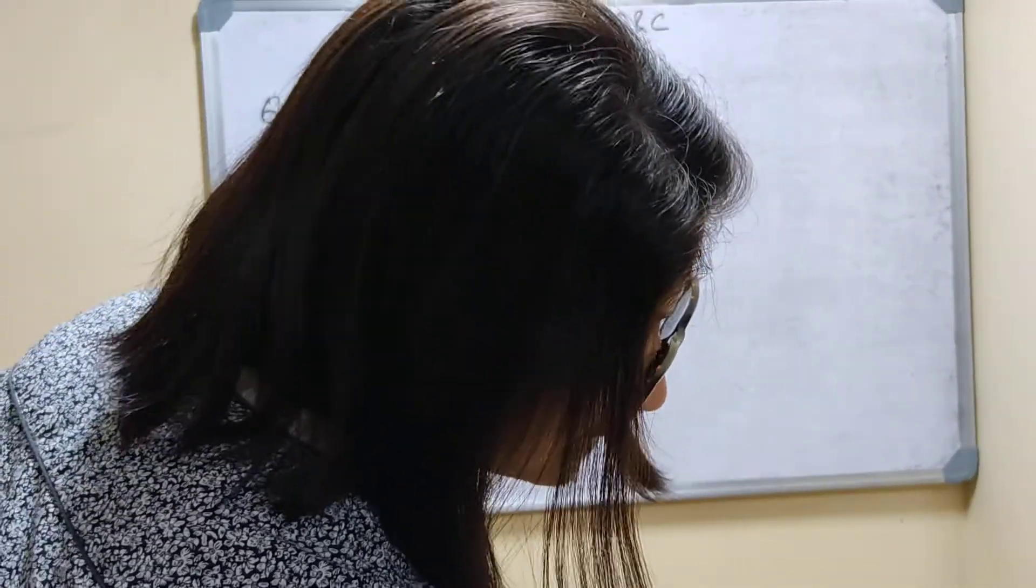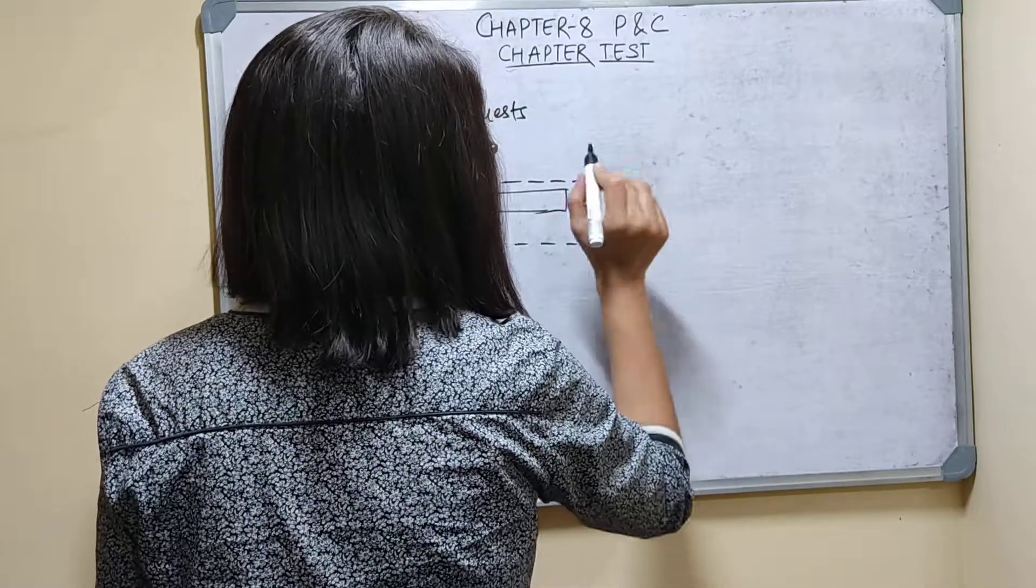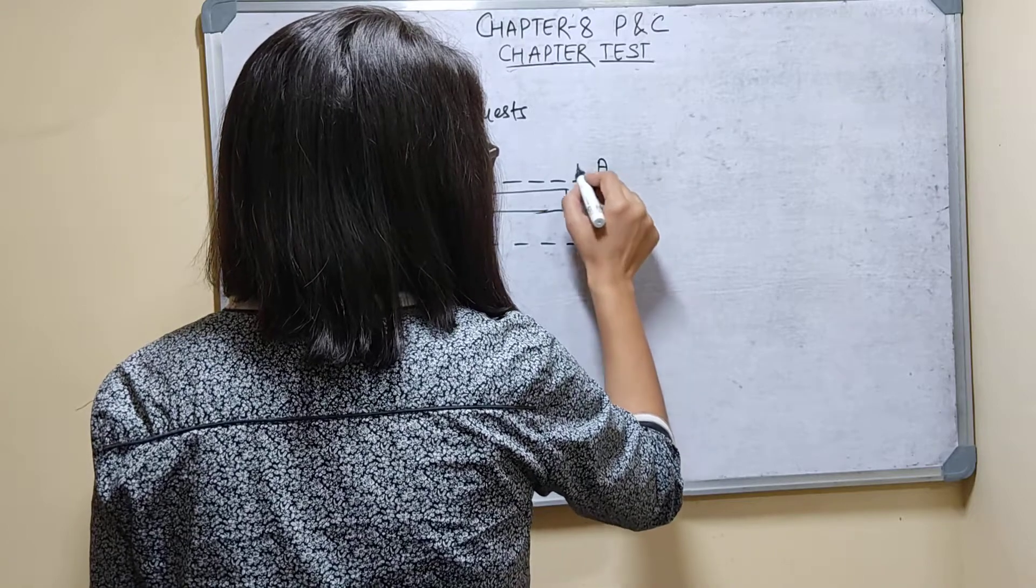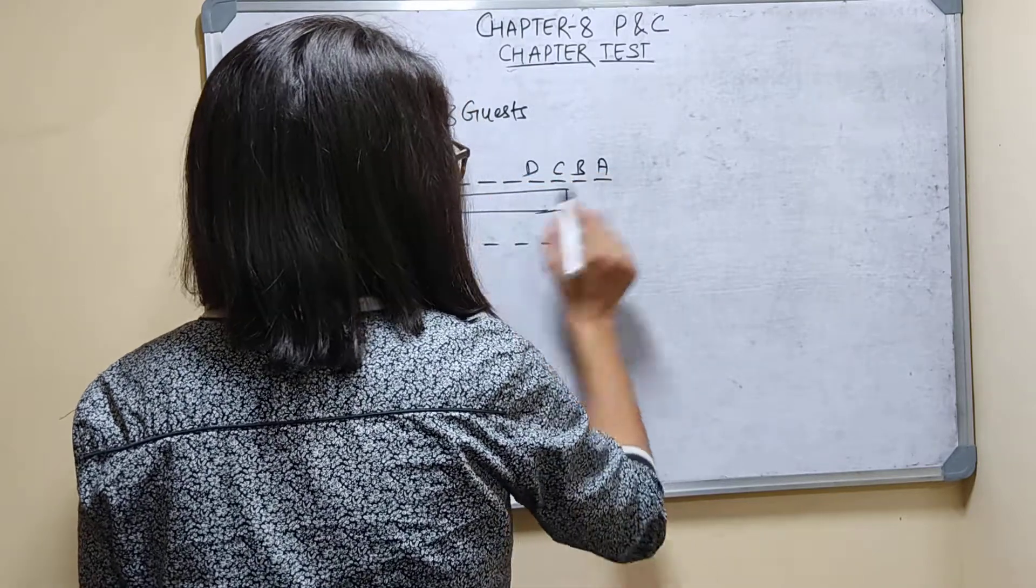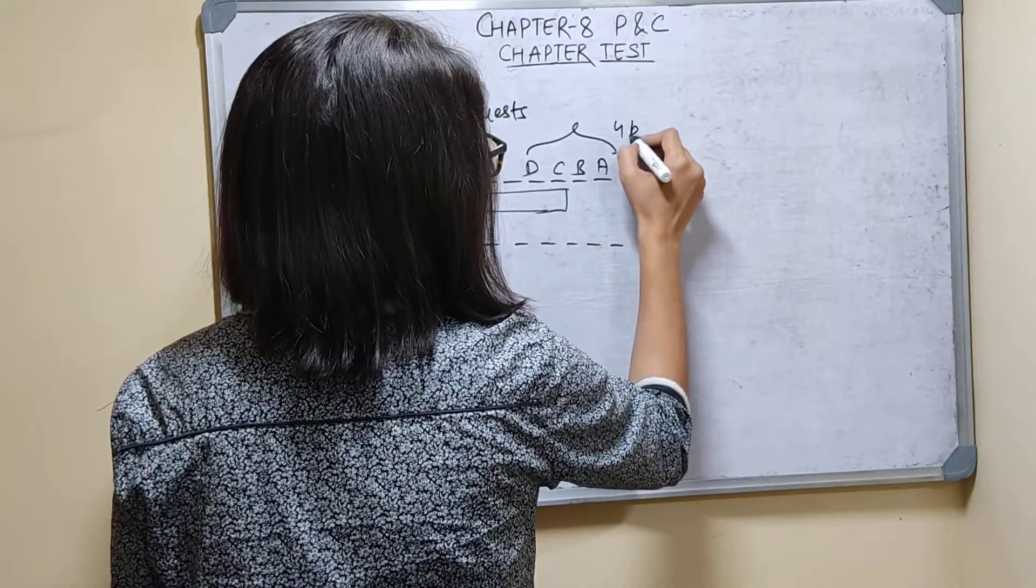4 particular guests desire to sit on one particular side. 4 will sit here only. I'm giving names A, B, C, D. They will sit here only. These 4 persons are fixed, they will sit on this side.